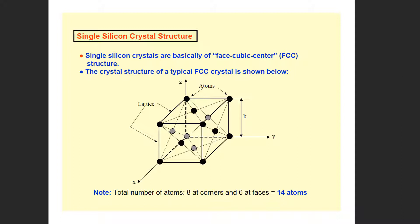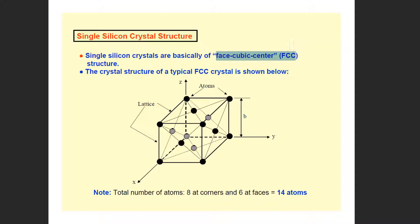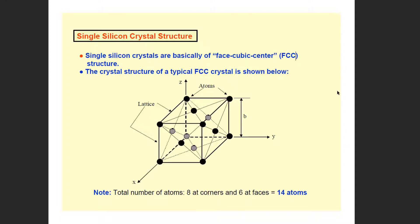The silicon structure is face-centered cubic. This is a cubic crystal with atoms at the corners and face-centered positions. The total number of atoms is 14 — 8 at the corners and 6 at the faces.